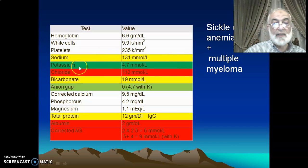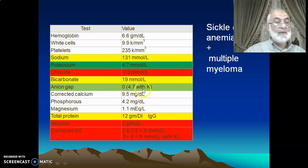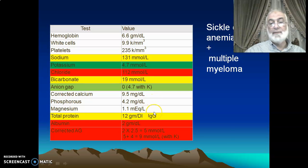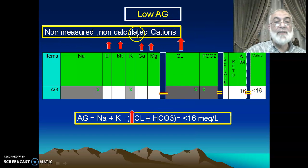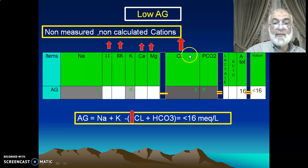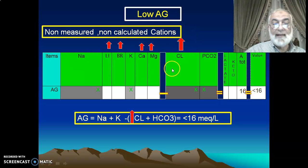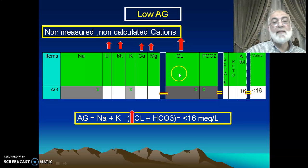In multiple myeloma you'll find sodium decreased, potassium normal, chloride increased due to increased immunoglobulin G, and bicarbonate decreased. When you measure the anion gap it is 0, or 4 when you add potassium. The anion gap is decreased due to the presence of non-measured cation with concomitant increase in chloride. Similarly, in lithium, bromide, calcium, and magnesium toxicity — all in the form of their chloride salts — chloride is measured and increased, giving a low anion gap due to unmeasured cationic species.